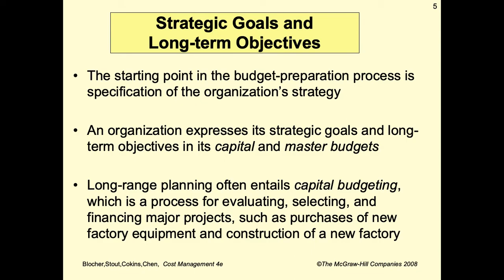The starting point in the budget preparation process is specification of the organization's strategy. An organization expresses its strategic goals and long-term objectives in its capital and master budget. Long-range planning entails capital budgeting, which is a process for evaluating, selecting, and financing major projects such as purchases of new factory equipment and construction of new factories.